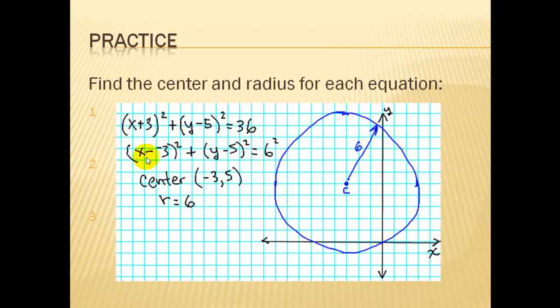Here's the first one written in standard template form, which is x minus something squared. We use our center and take the square root of 36 to get our radius. And again, we can sketch the graph.